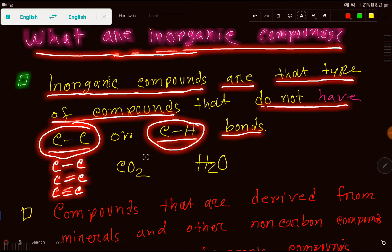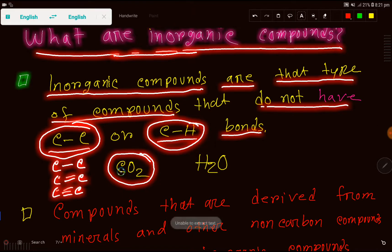Look at carbon dioxide — in carbon dioxide you are not getting any carbon-carbon bond or carbon-hydrogen bond, so this is an inorganic compound. But note that carbon dioxide has carbon; containing carbon doesn't mean that it is organic — it may still be inorganic. And water doesn't have any carbon, so at first sight you can say this is inorganic.